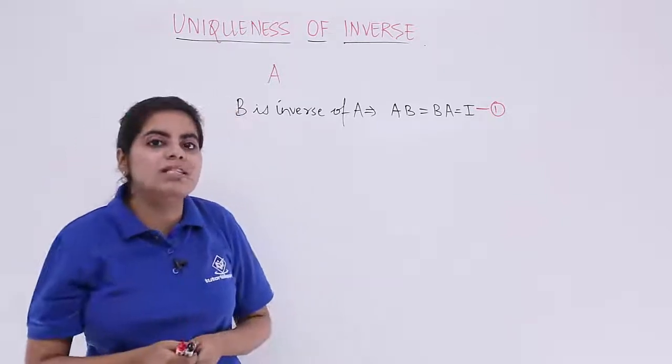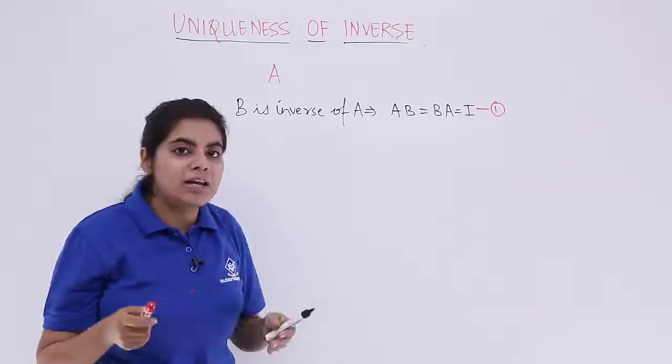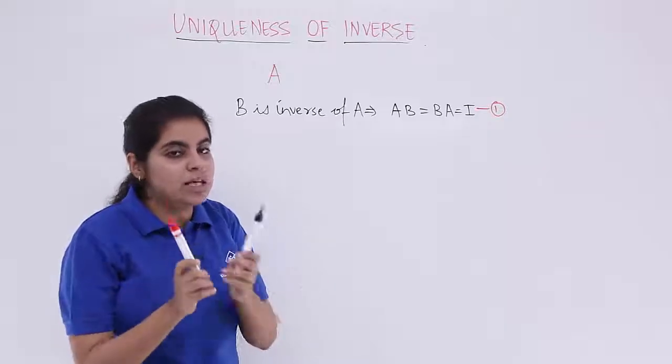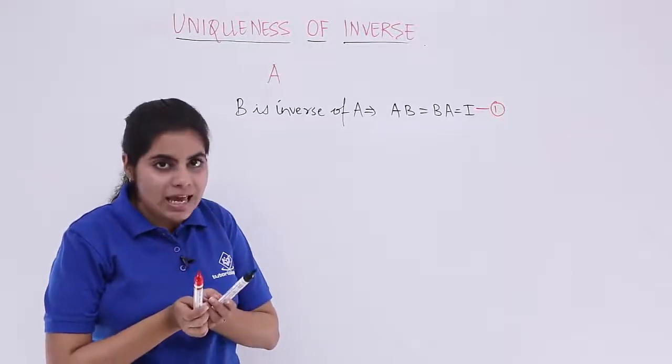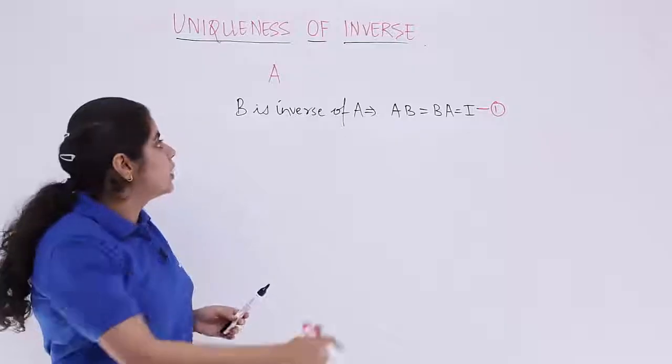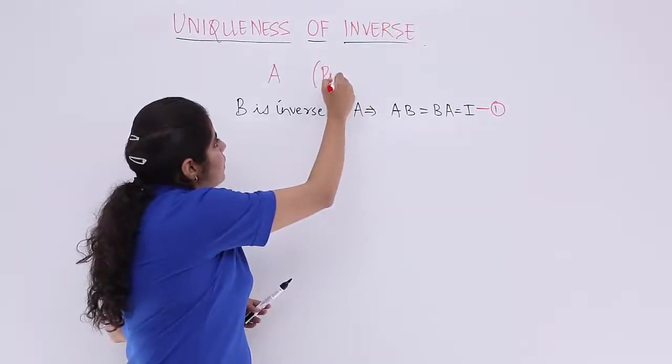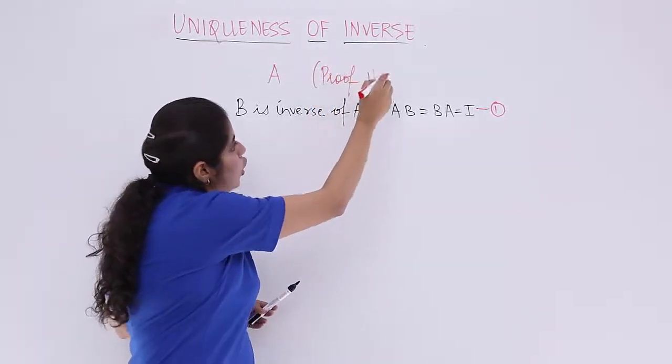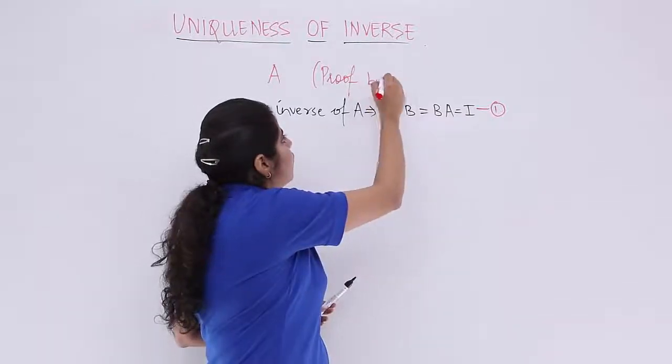At the end of this video you'll be seeing that I'll be contradicting my own statement and we'll be proving that yes, B is equal to C. So the uniqueness exists, inverse is only one. So we are proving by contradiction.